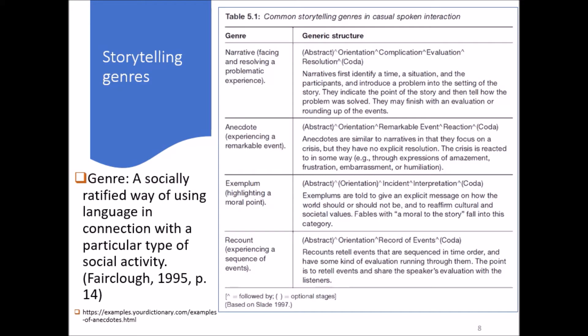Anecdotes are stories about experiencing a remarkable event with a reaction. The stages include abstract, orientation, remarkable events, reactions, and perhaps a coda or conclusion. Anecdotes are similar to narratives in that they focus on a crisis, but they have no explicit resolution. They just recount the crisis, but no resolution. The crisis is reacted to in some way—for example, you express amazement, frustration, embarrassment, humiliation, agreement, disagreement, uncertainty, or things like that.